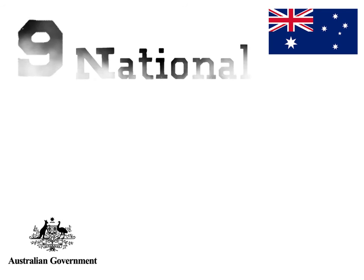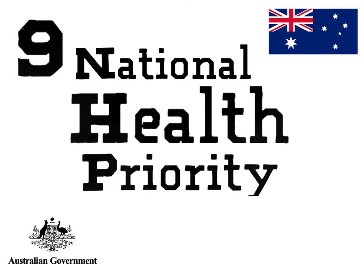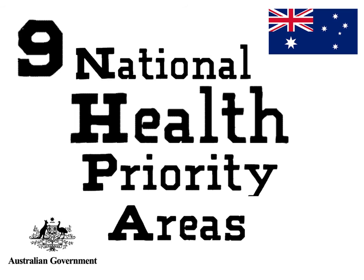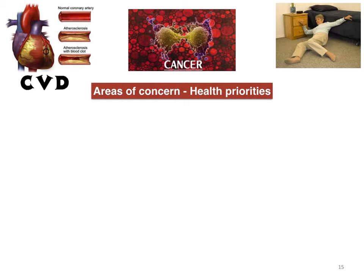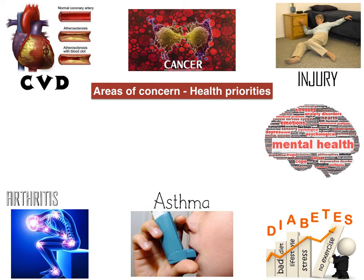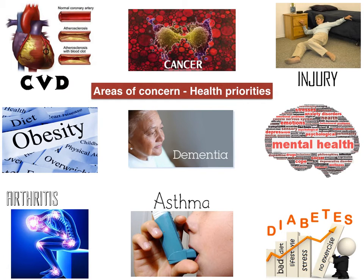Epidemiology can tell us about the health issues of greatest concern to the population. Through this, the Commonwealth Government has identified nine national health priority areas: cardiovascular disease, cancer, injury, mental health, diabetes, asthma, arthritis and musculoskeletal disorders, obesity, and dementia. Epidemiology helps governments identify these issues and, where a disease is significantly affecting the population, allocate resources through data and statistics to prevent further impact.